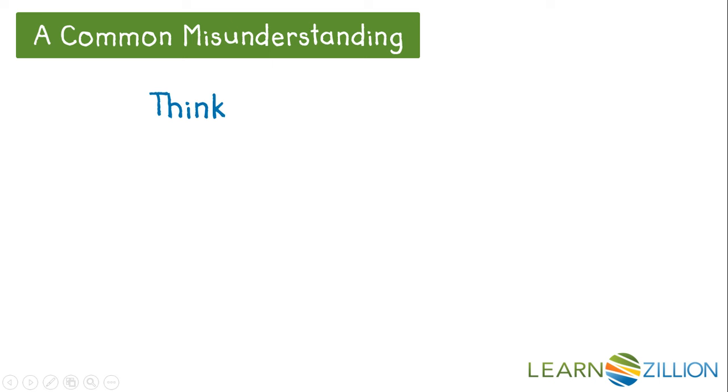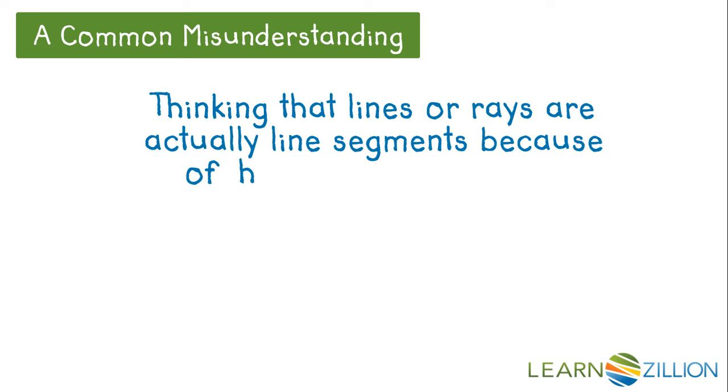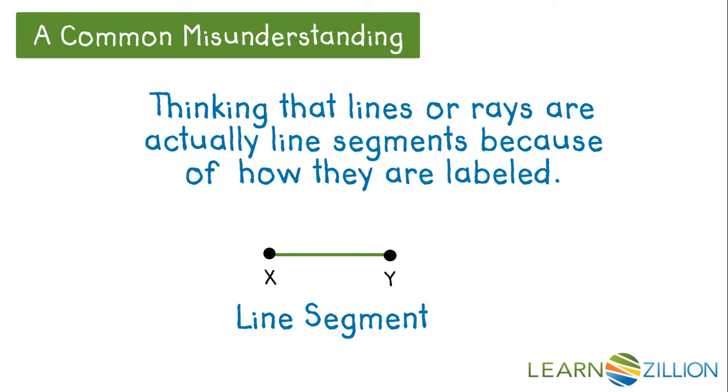A common misunderstanding is thinking that lines or rays are actually line segments because of how they are labeled. Take a look at this line segment. It has two endpoints. Now this is a ray. It only has one endpoint. And this we would call a line. There are no endpoints.